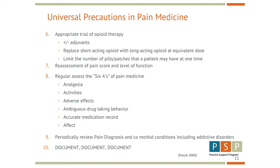The other principles and precautions in the use of medications is always during the trial period a review, and in particular with opioids it's the six A's. This is analgesia, activities, any adverse side effects, what they call ambiguous drug-taking behavior or medication misuse, the affect and emotional state, and then finally our own accurate documentation. That's highlighted in point number ten — we really need to document our conversations, our dosages, how they're using it, and what are the functional goals that we're trying to match the medications to.